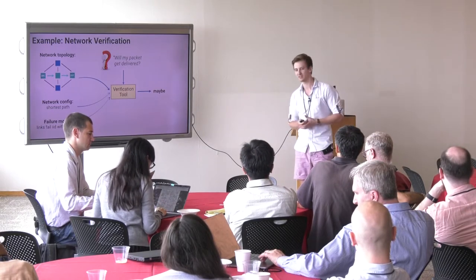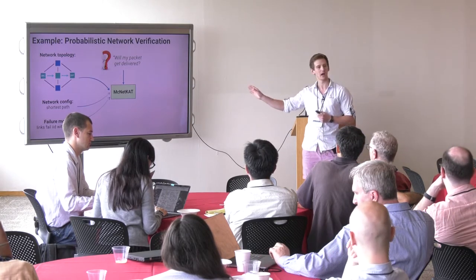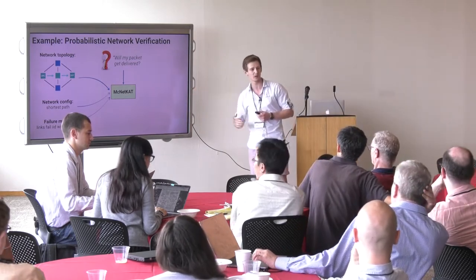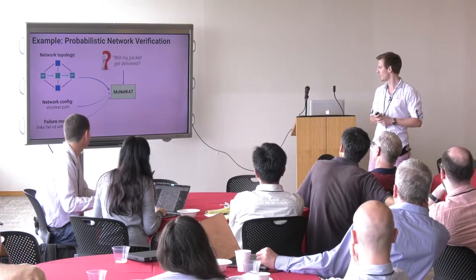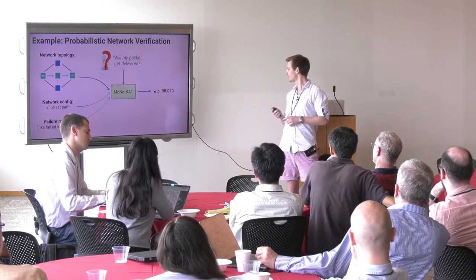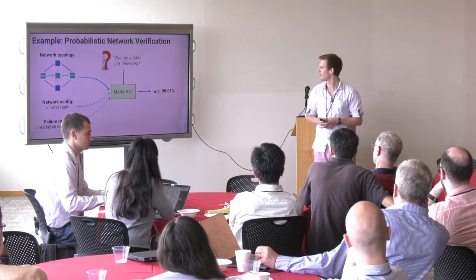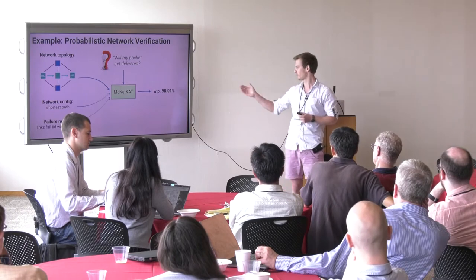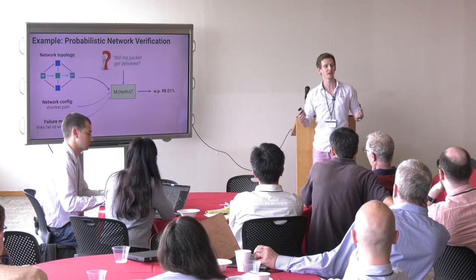While this answer is correct, it's really not helpful. This is where our work comes in. Let's replace the state-of-the-art verification tool with our latest tool called MagnetCat, which is a probabilistic network verification tool. MagnetCat is equipped to reason about networks in a probabilistic manner, so it can give a much more helpful answer. It can tell us the packet will take this path through the middle of the network, and so the probability of packet delivery is close to 98%. That's much more useful.